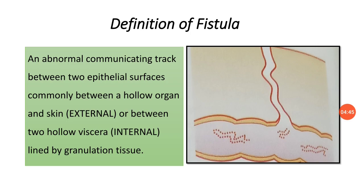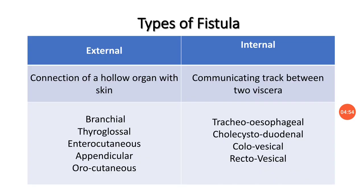It can also connect two hollow organs to the skin surface or exterior, or connect two vessels — like an arteriovenous fistula. Types of fistula: external and internal. According to the definition, when a hollow organ connects with the skin, it is called an external fistula. Examples include branchial fistula, thyroglossal fistula, enterocutaneous fistula (between intestine and skin), appendicular fistula, and orocutaneous fistula.